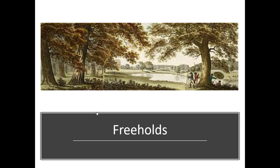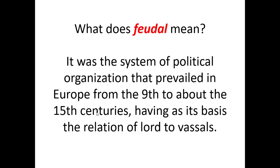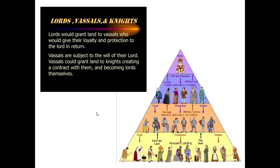The feudal system was the system of political organization that prevailed in Europe from the 9th to about the 15th centuries, having as its basis the relation of lords to vassals. Lords would grant land to vassals who would give their loyalty and protection to the lord in return. Vassals were subject to the will of their lord and could grant lands to knights below them, creating a contract — and hopefully at some point become lords themselves. Looking at this pyramid, the top is in charge, they have all the wealth, and the bottom works hard to make the top wealthy.